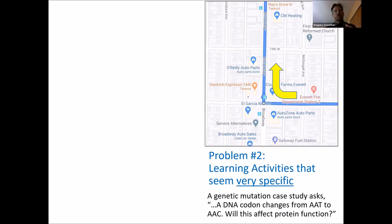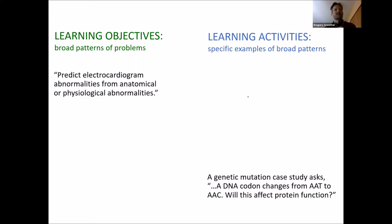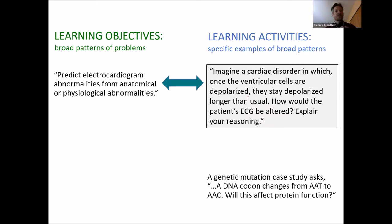Ideally, what we want to do is provide students with both the broad context and some specific well-chosen examples. Thus, a learning objective that seems very broad can be made more useful by explicitly linking it to specific examples.